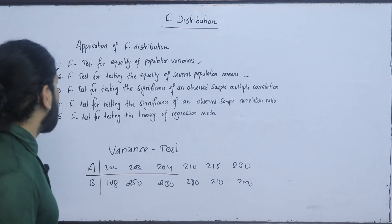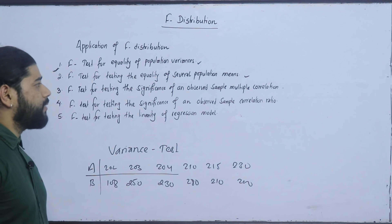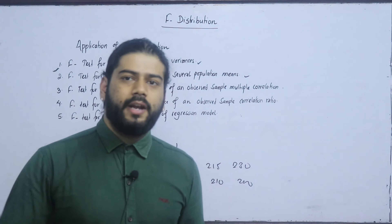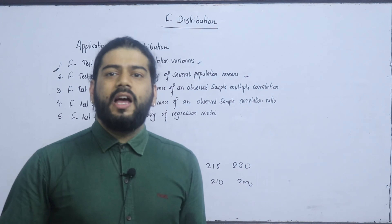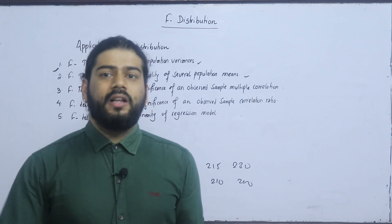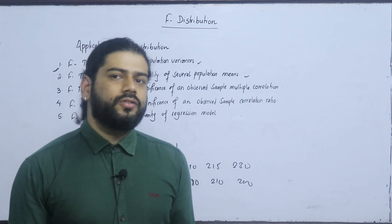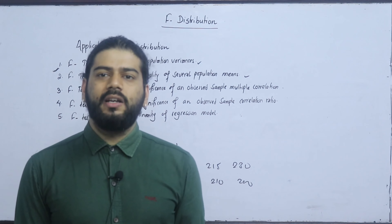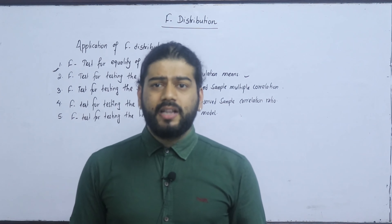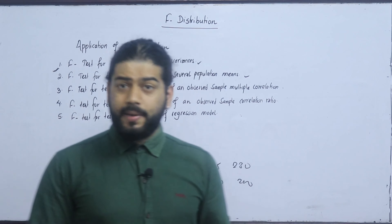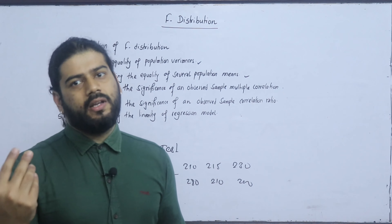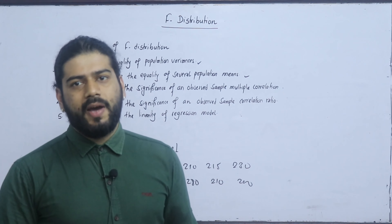Second, for testing the equality of several population means — what is the mean? The mean is several, the mean is the same. We have two tests — we have to do single and double, and we have to do 3, 4, 5. We have to do F-test, we have to do ANOVA. We have to use variance test and T-test.